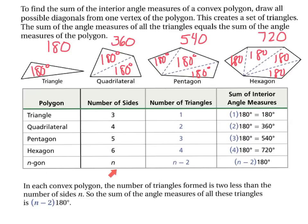A triangle has 3 sides, a quadrilateral 4, a pentagon 5, a hexagon 6, and an N-gon has N sides. In a quadrilateral we had 2 triangles, 3 in a pentagon, 4 in a hexagon. You multiply those by 180 to get the total interior angle measure. Going from 3 sides to 1 triangle, 4 to 2, 5 to 3, 6 to 4 — we subtract 2. So we take N−2 to get the number of triangles, and multiply by 180.